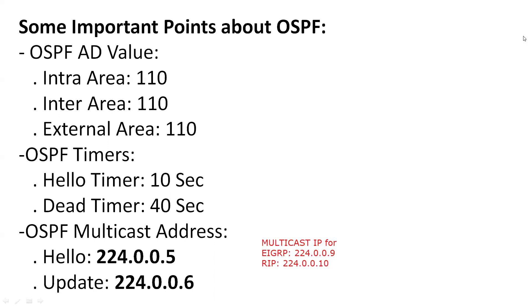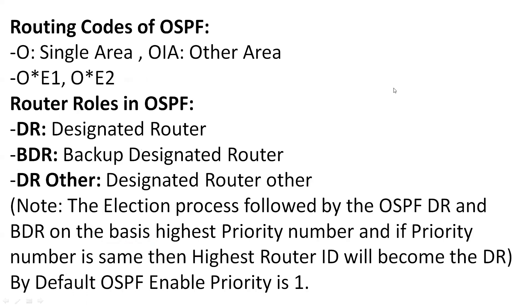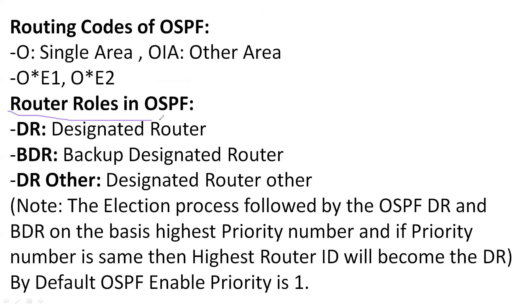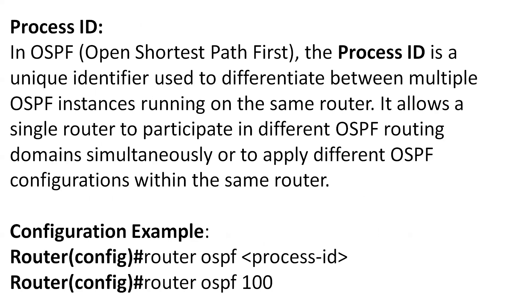If anyone doesn't know about multicasting, they can check the previous videos already uploaded. Regarding OSPF routing codes: 'O' is used for single area in the routing table. Routers are assigned roles in OSPF — DR is the Designated Router, also called the master router. Other roles include BDR and DR Other. There are rules for selection of these roles, covered in a separate upcoming class.